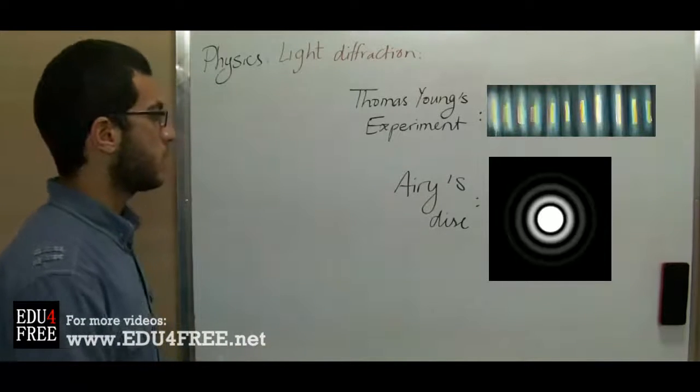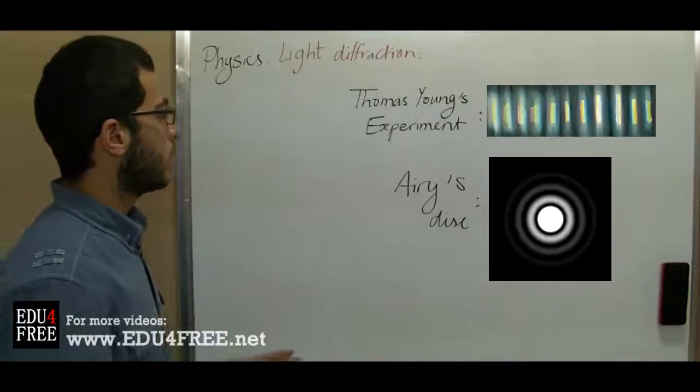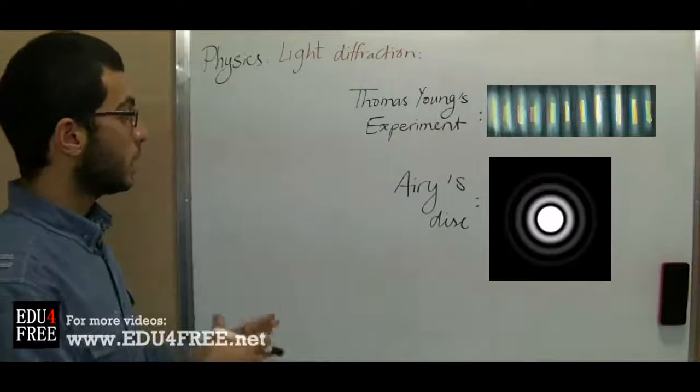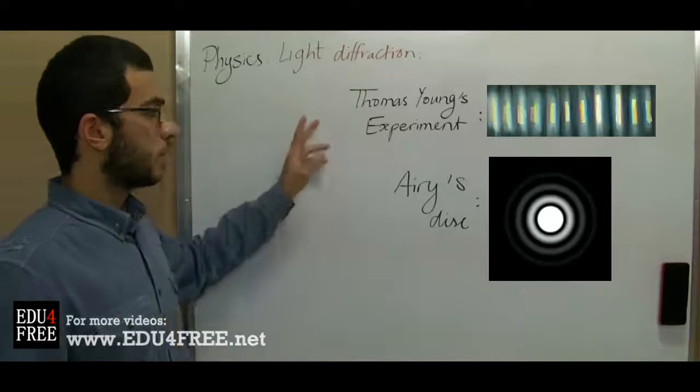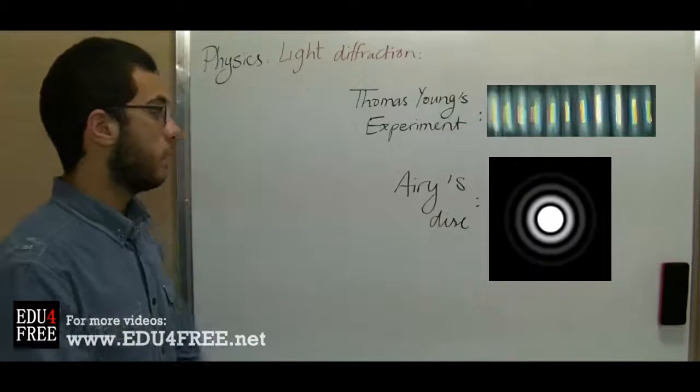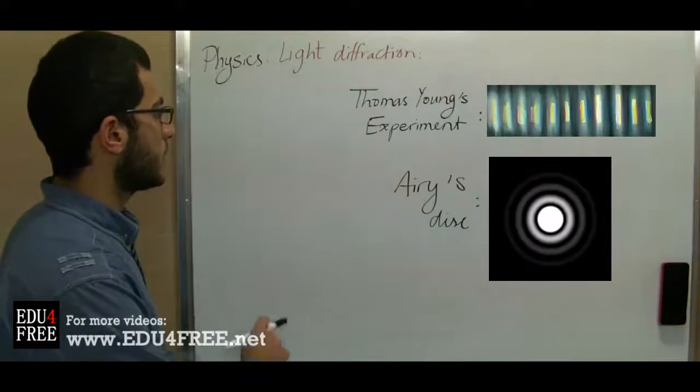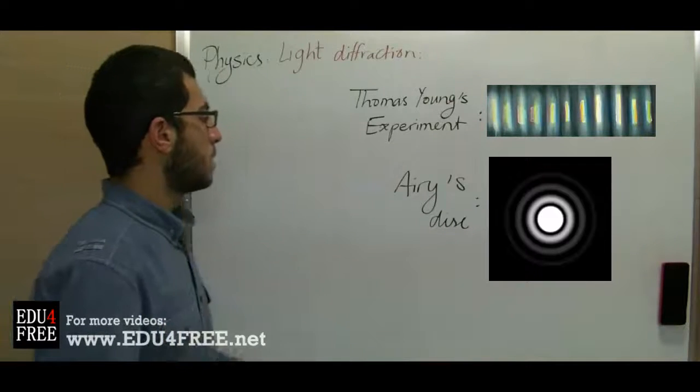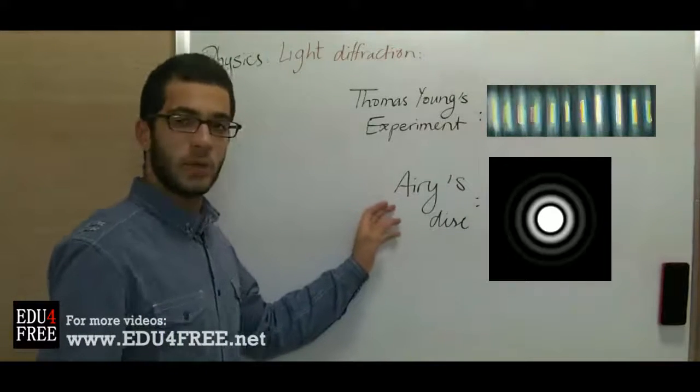then dark, then bright spots and so on according to the wavelength of light on equal distances, because the angles here are always small, especially with light, because the wavelength of the visible light is small. So today we will learn something called Airy's disk.